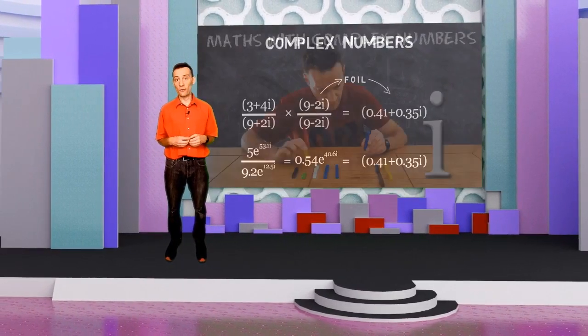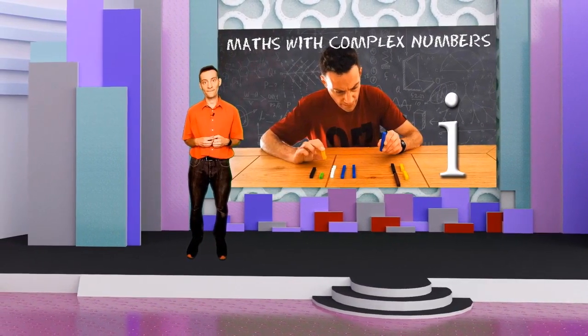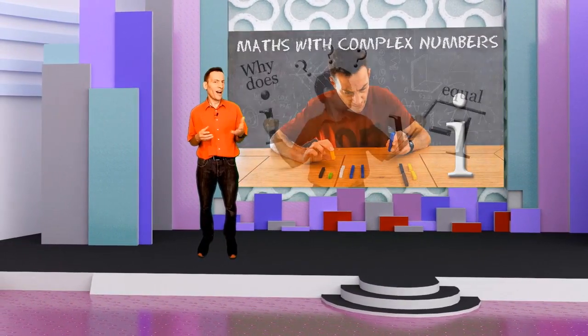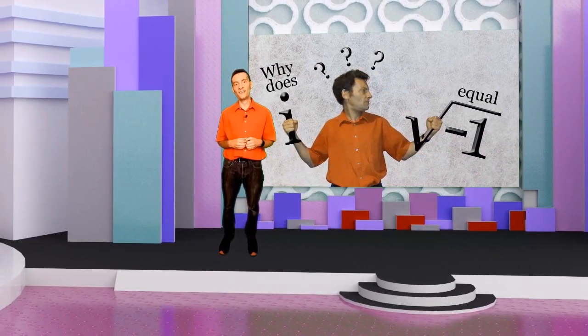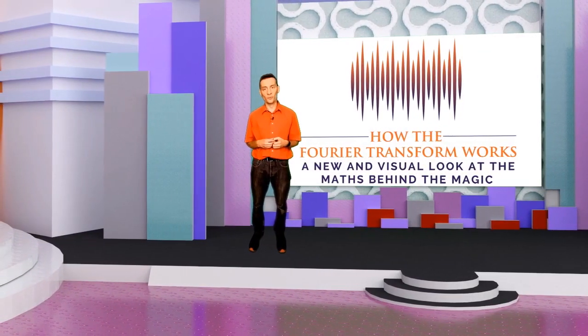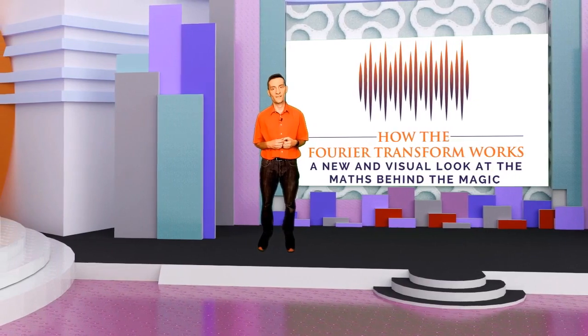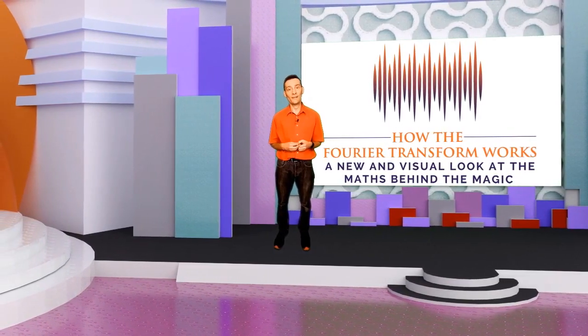If you'd like to see the whole series on maths with complex numbers, you can find it here. Have you ever wondered why i is the square root of minus 1? You can find out in another of my videos. See how complex numbers are used in the Fourier transform by visiting my online course on how the Fourier transform works. Please consider supporting the making of these videos by becoming a Patron.